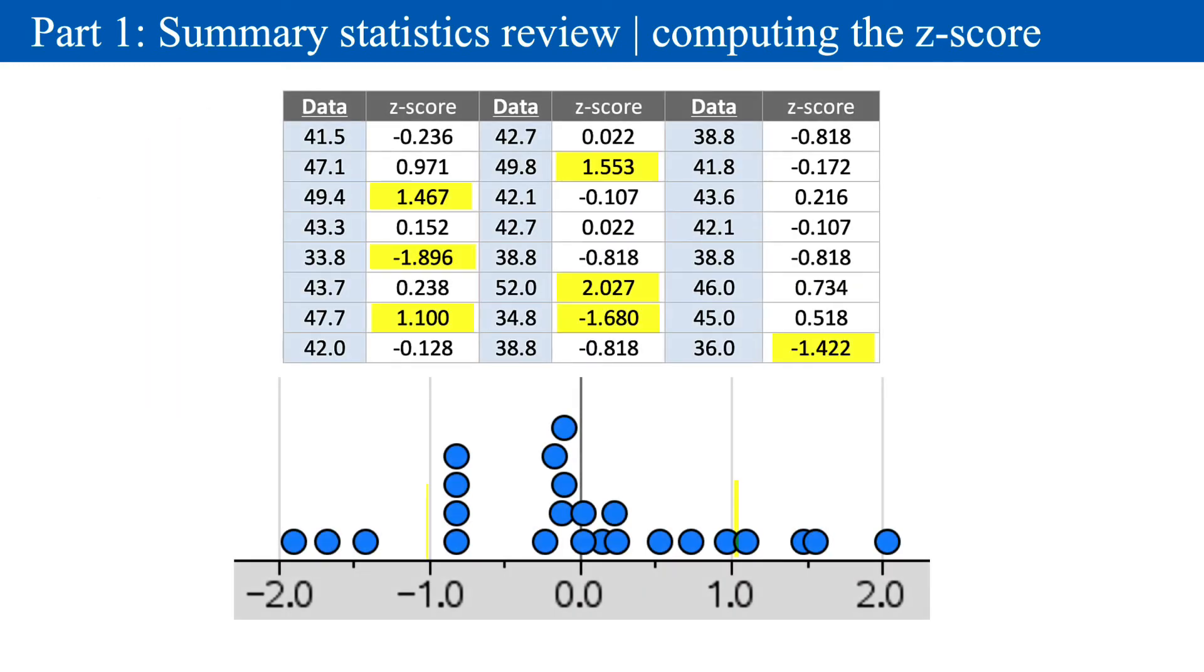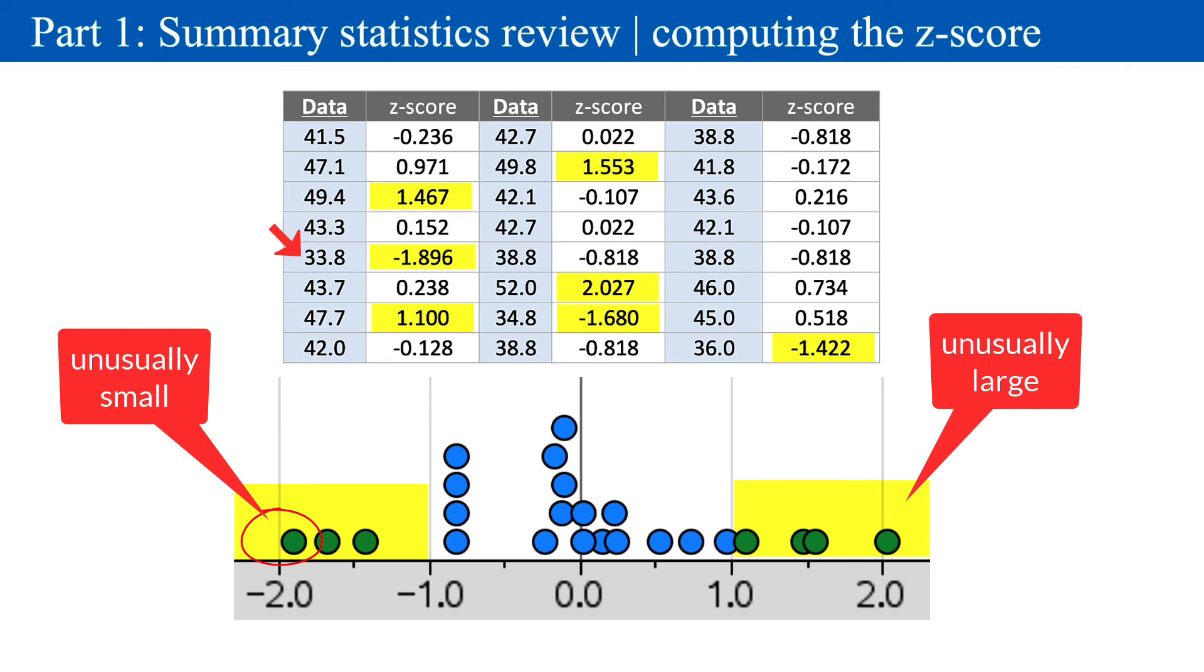These z-scores and their associated data in yellow are what you'd call unusually large or small. This one is unusually large. And on the other extreme, this one here is unusually small. So, in summary, z-scores help us identify unusual or otherwise interesting measurements.